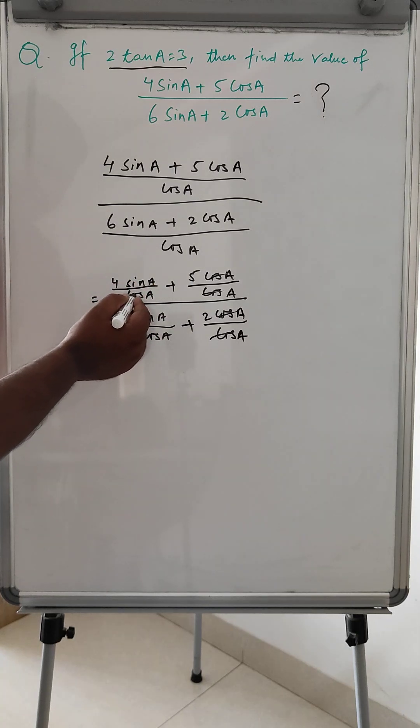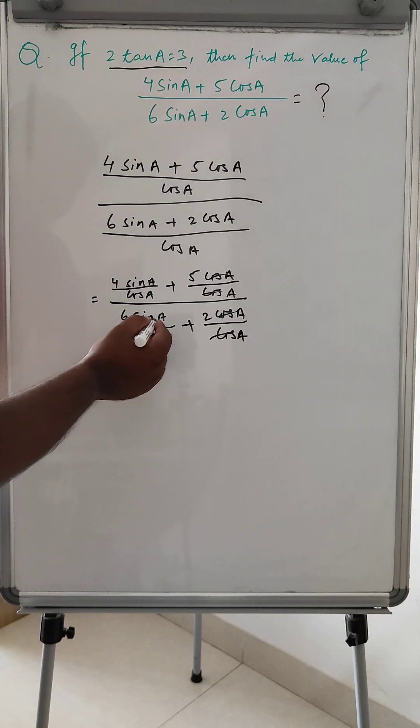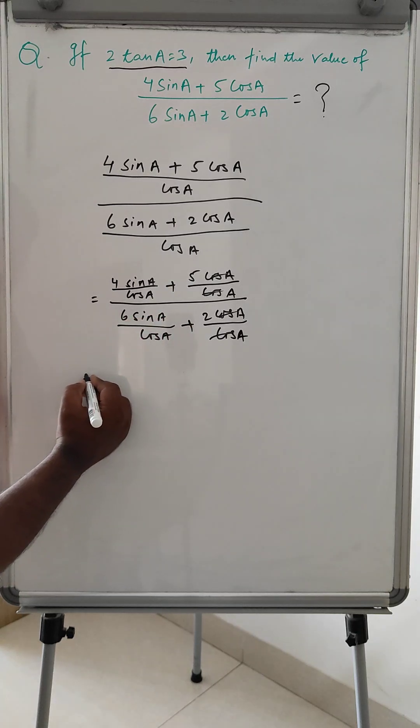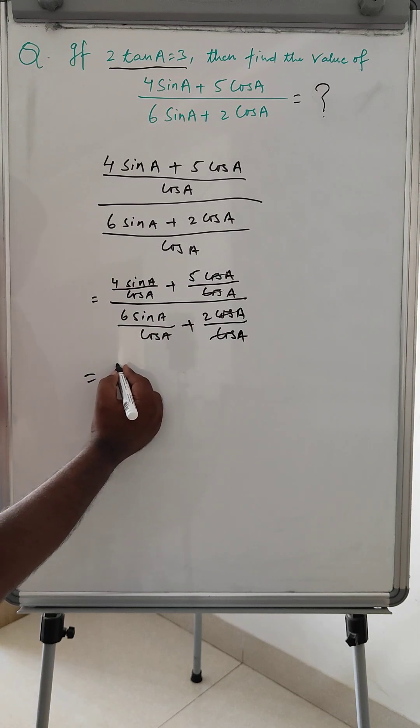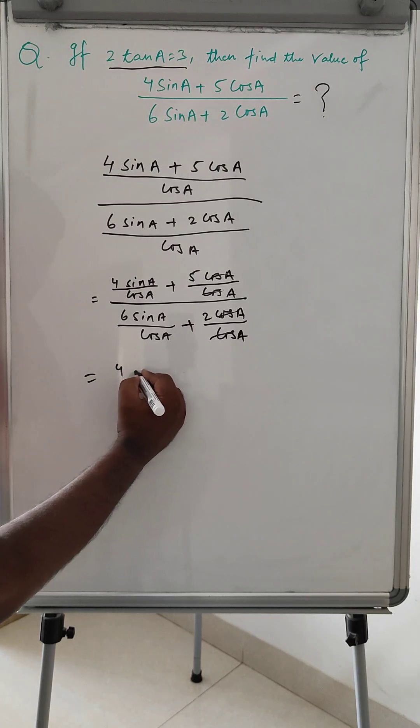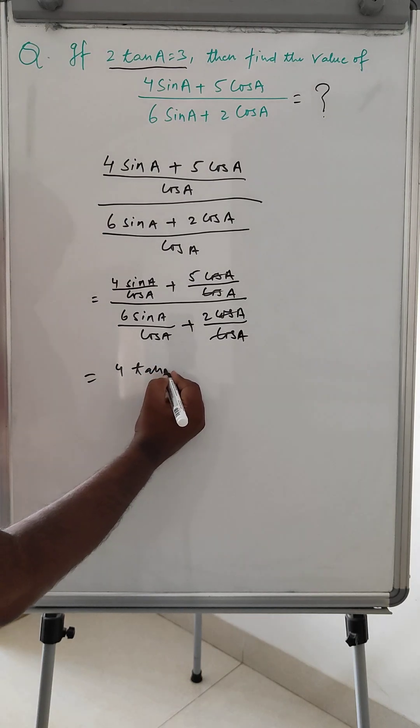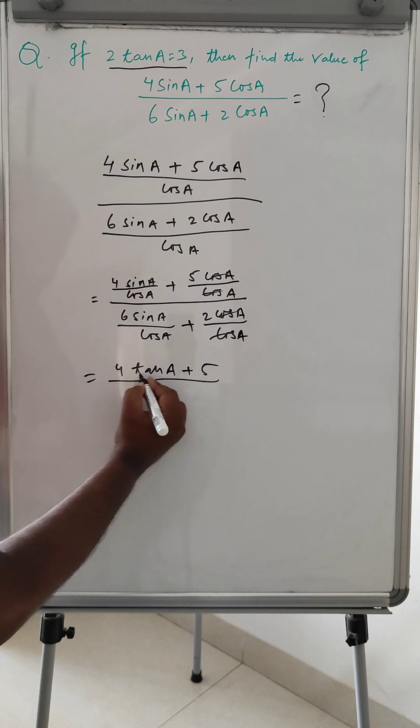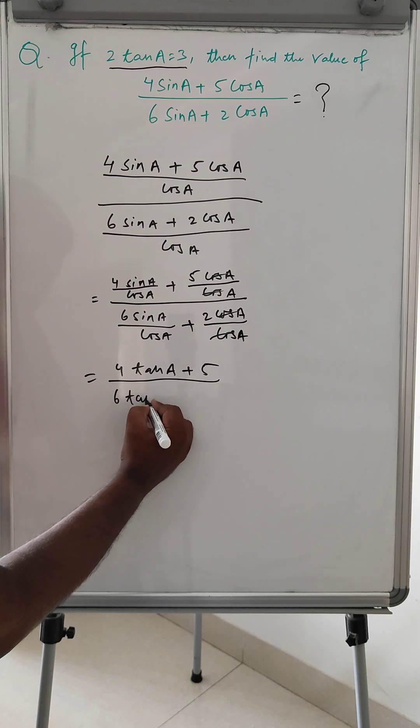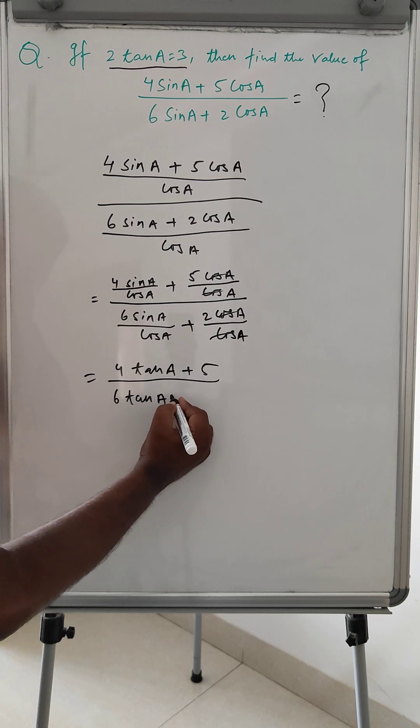And this sin A by cos A will become tan. Here also sin A by cos will become tan. So here we can write 4 tan A plus 5, and this will be 6 tan A plus 2.